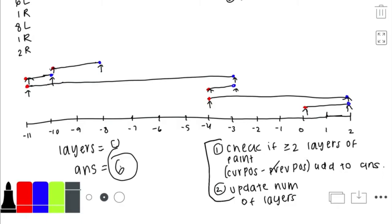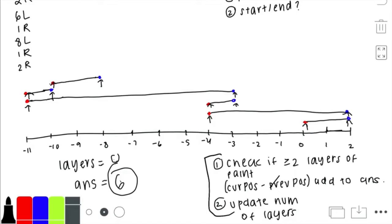Let's go over the time complexity. The two main operations are iterating through all the points and sorting them, so the overall time complexity is O(n log n) due to the sorting step. Looking at the constraints, n can be up to 100,000, so a solution running in O(n log n) should be able to handle all test cases on time. With that, let's go over the code.